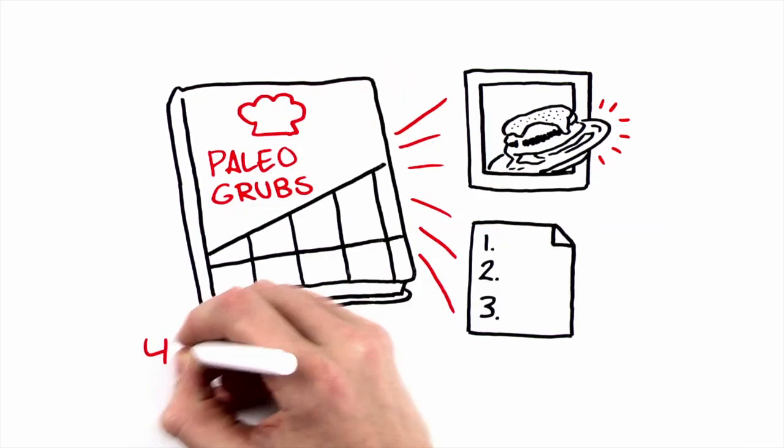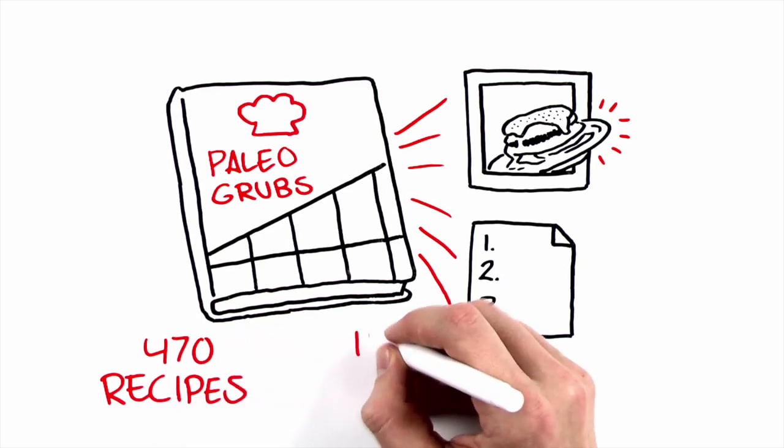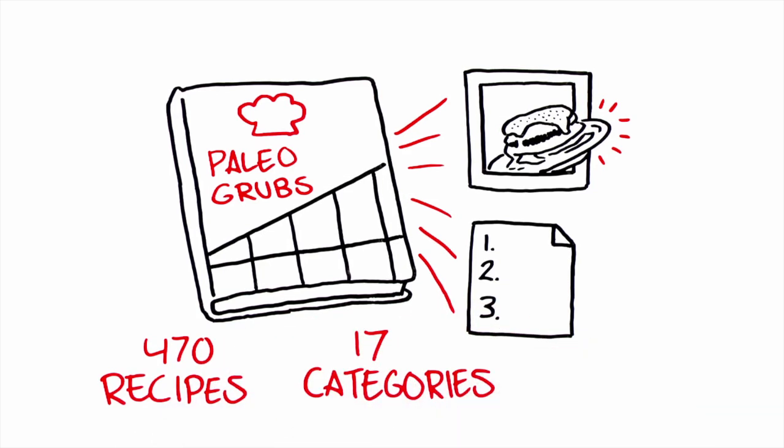The Paleo Grubs book contains more than 470 recipes in 17 comprehensive categories ready to satisfy the biggest hunger or smallest craving.